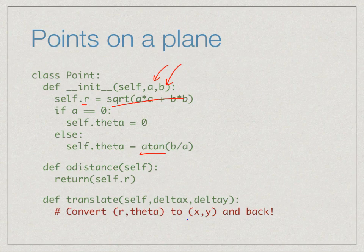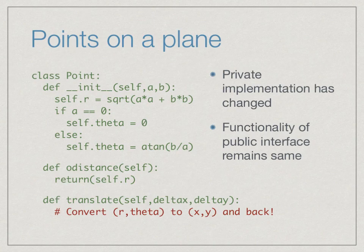What you must always keep in mind is that the implementation should not change the way the functions behave — the external user must see the functions behave exactly the same way. In this example we changed the private implementation from x,y to r,theta, but the functionality of the public interface — functions like o_distance and translate — remains exactly the same.